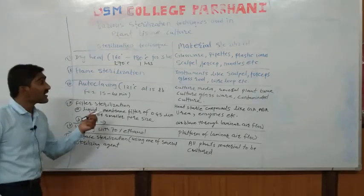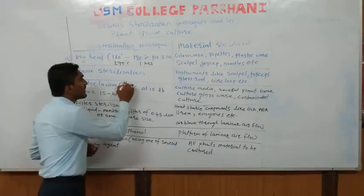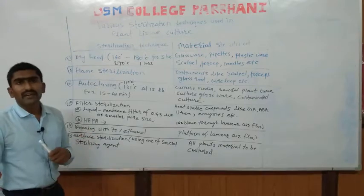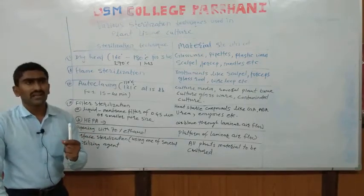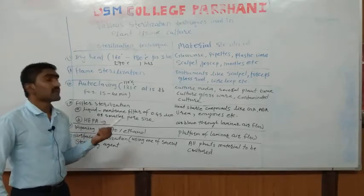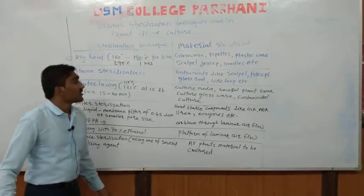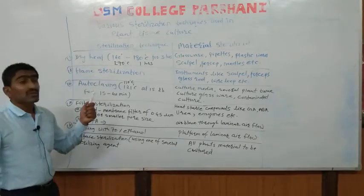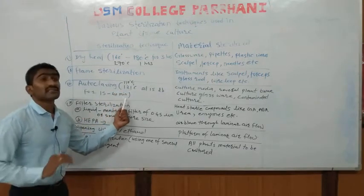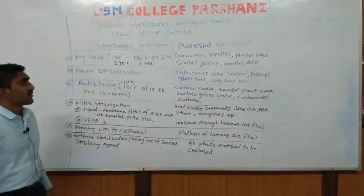Sometimes we keep media for up to 40 minutes and reduce the temperature to 110°C. This condition is applied when the media contains heat-sensitive elements — if we raise the temperature, those elements may be lost. So for such media, we keep it at 110°C for a longer time of 40 minutes. This is the general principle of autoclaving.